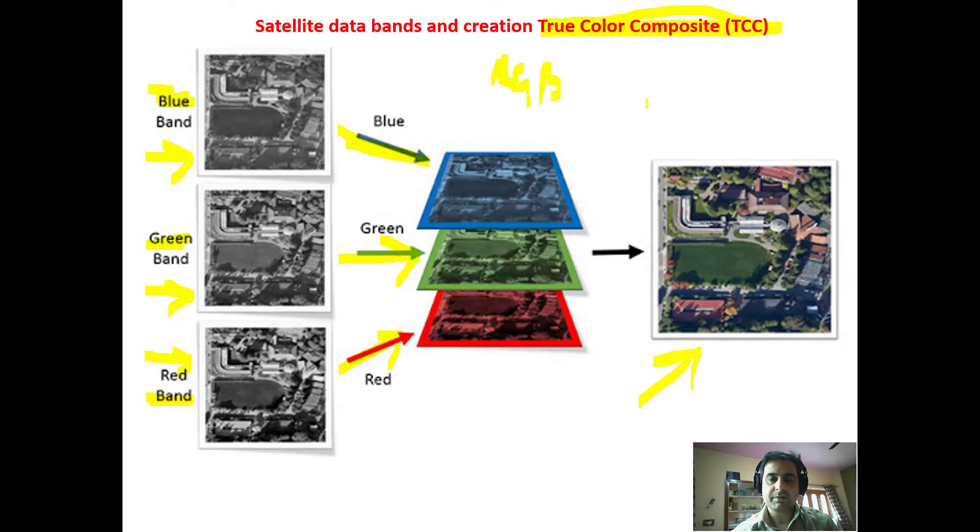Because red has the maximum wavelength, and there is a possibility that the slightest of the vegetation gets reflected in red. So we don't want to miss out on any information about the vegetation that is reflected in red. So we would preferably like to go for false color composite, and that too standard false color composite.